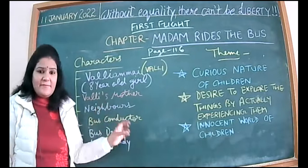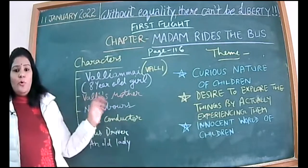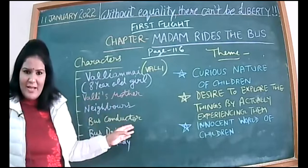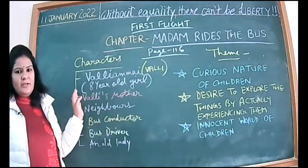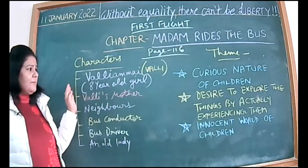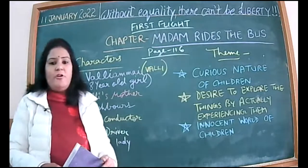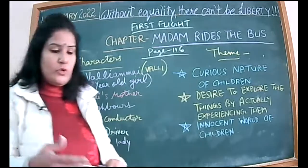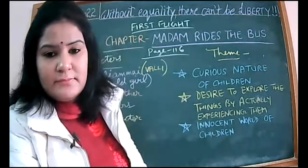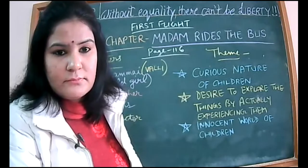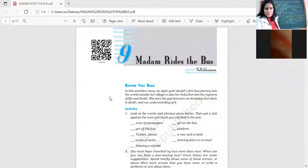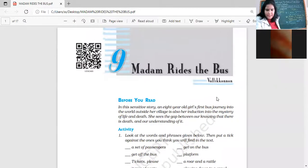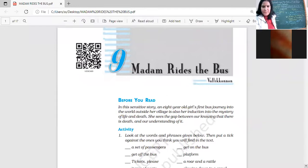She saves money for the fare, boards the bus, and has experiences on the journey — that is what we will be reading about. This chapter tells us about the curious nature of children and how they want to know everything. The writer of this story is Vallikkannan.